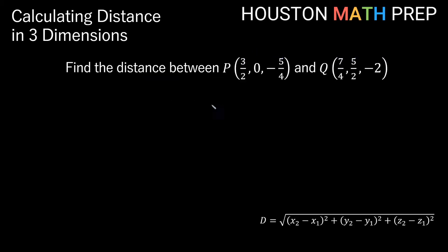Looking at our next example with some fractions in it, we want to find the distance between the point (3/2, 0, -5/4), so that'll be our x1, y1, and z1. And the point Q, our second point, 7/4 is our x2, 5/2 is our y2, and -2 is our z2.